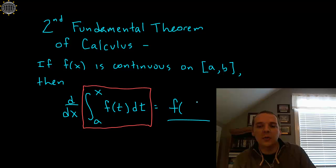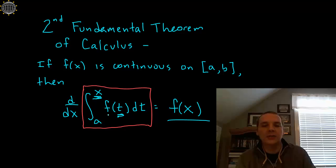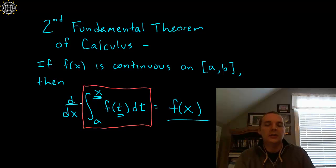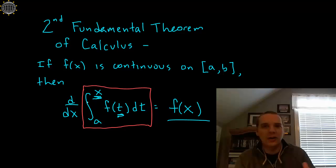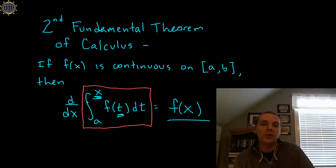Hopefully you said you'd get the original function back — and that's certainly true. Now, will it be f(t) or f(x)? It's actually going to be f(x). The reason is that when you integrate f as a function of t, you plug in x and plug in a before differentiating, so your function won't have t's anymore — they'll have x's from that step where you plugged in the limits of integration. In a nutshell, this theorem says that derivatives and integrals are inverse operations: if you integrate a function and then differentiate it, you get the same function back.